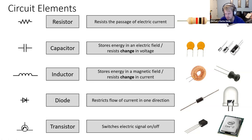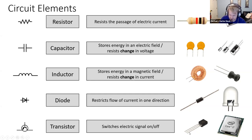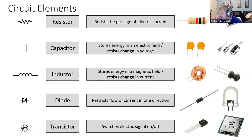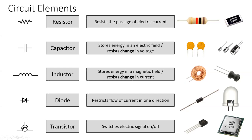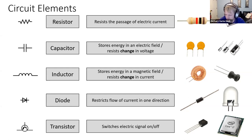Inside the chip there are many transistors. How many transistors do you think are inside one of these computer chips? There are billions of transistors inside your computer chips. For example, the CPU chip in my computer — an Intel i5-3570 from 2012 — has 2.1 billion transistors inside. The more transistors you have, the more processes you can have, and that increases the speed of computation.